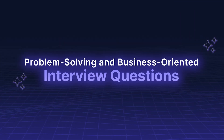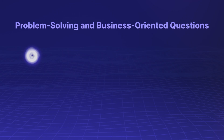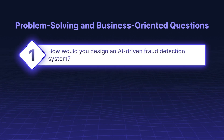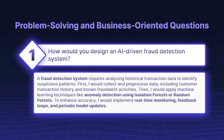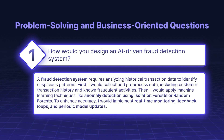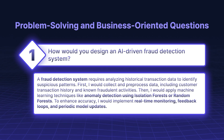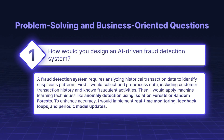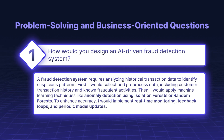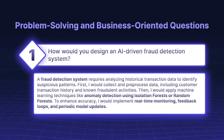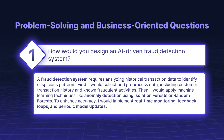Problem-solving and business-oriented questions. How would you design an AI-driven fraud detection system? A fraud detection system requires analyzing historical transaction data to identify suspicious patterns. First, I would collect and pre-process data, including customer transaction history and known fraudulent activities. Then, I would apply machine learning techniques like anomaly detection using isolation forests or random forests. To enhance accuracy, I would implement real-time monitoring, feedback loops, and periodic model updates.